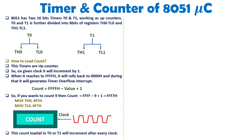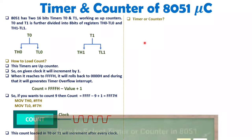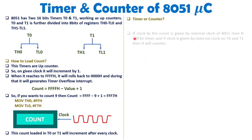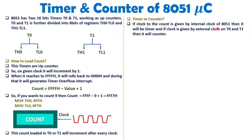This count can be loaded into T0 or T1, and both timers increment after every clock pulse. To decide whether a timer is working as a timer or counter: if the clock is provided by the 8051 internally, it works as a timer; if the clock is given by an external signal on the T0 or T1 pin, it works as a counter. The 8051 has two pins for external clock input to the timers — one for T0 and one for T1 — both located inside Port 3.